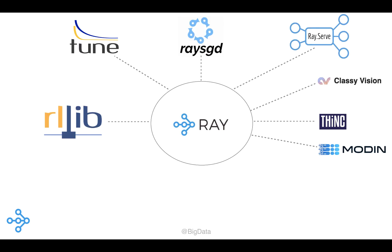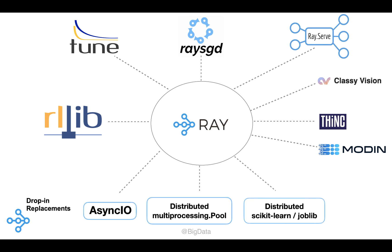There are two types of libraries in the Ray ecosystem. First are libraries for new workloads. Examples include libraries built on top of Ray that address different aspects of machine learning. Secondly, there are drop-in replacements for parallelizing existing libraries used by Python developers.